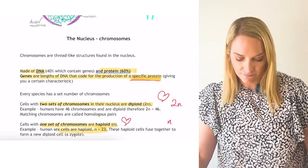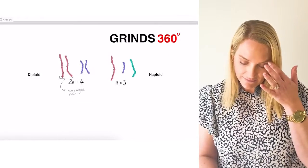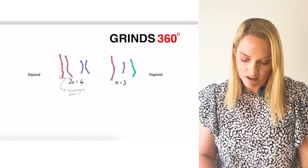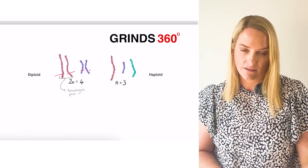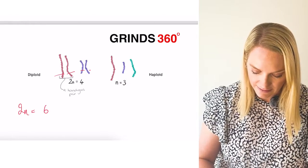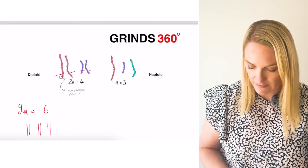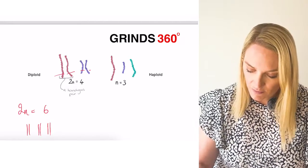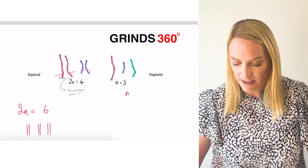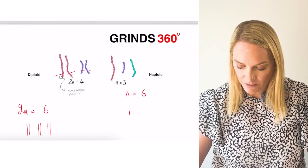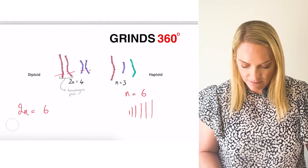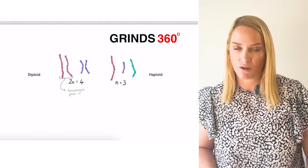For example, if 2n equals 4, we have four chromosomes. If 2n equals 6, we have six chromosomes. If n equals 3, we have one set of three chromosomes. If n equals 6, we have one set of six chromosomes. Diploid means two sets of chromosomes; haploid means one set of chromosomes.